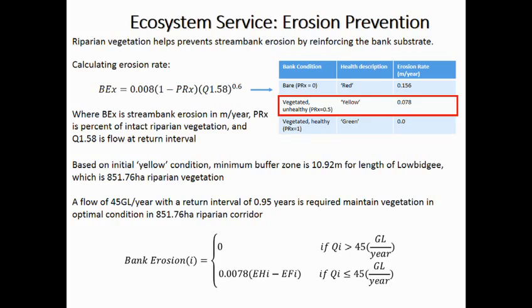If we consider the riparian vegetation for the whole length of the catchment, it ends up with about 851 hectares of riparian vegetation, which can be inundated quite easily with just over a 45 gigalitre per year flood. We assumed bank erosion is going to be zero when we have healthy trees — of course, this is not always true, bank erosion happens in all cases. But if the flood is not delivered in a timely manner to maintain the health of these trees, then we expect to see a decrease in bank stabilization proportional to tree health along the riparian corridor.